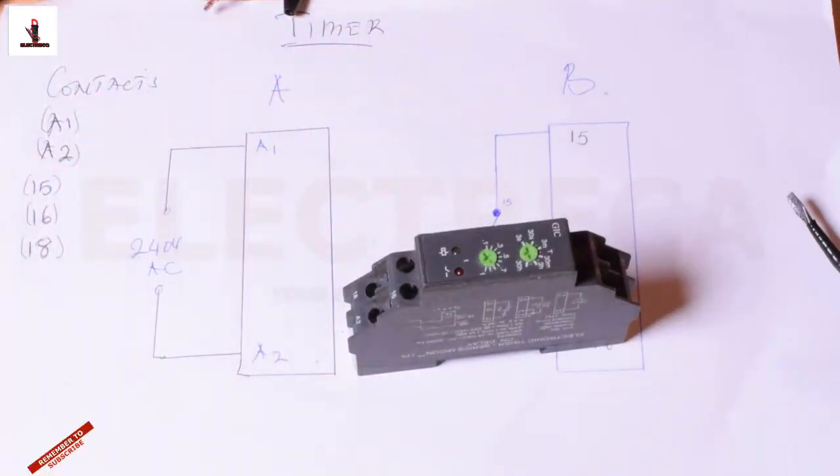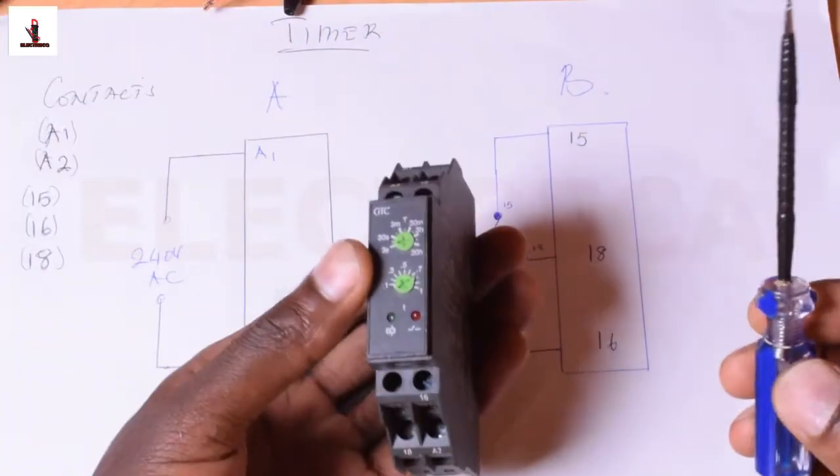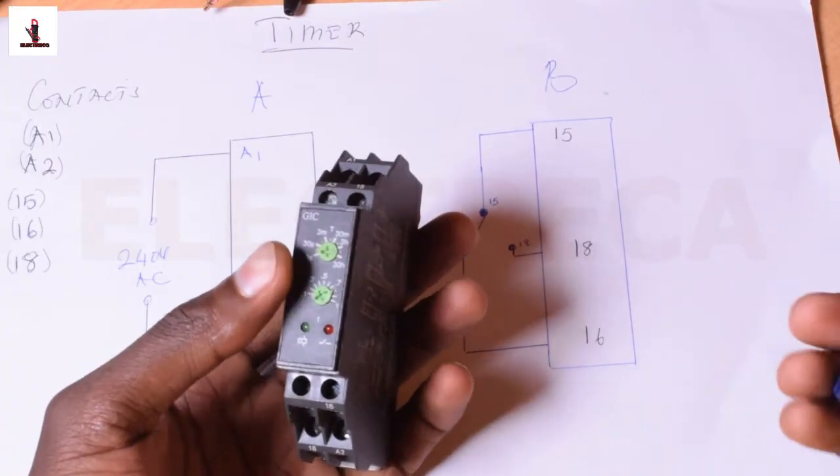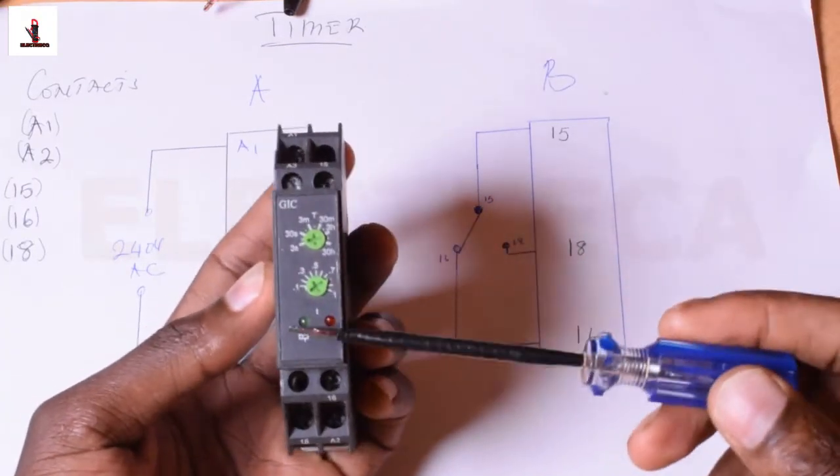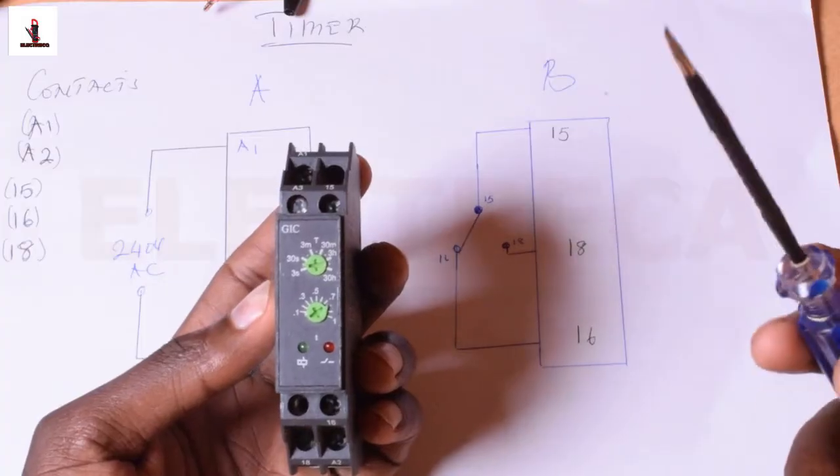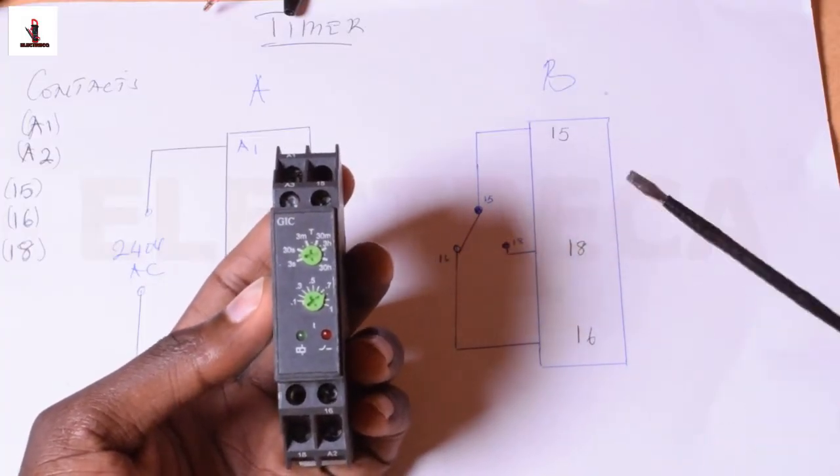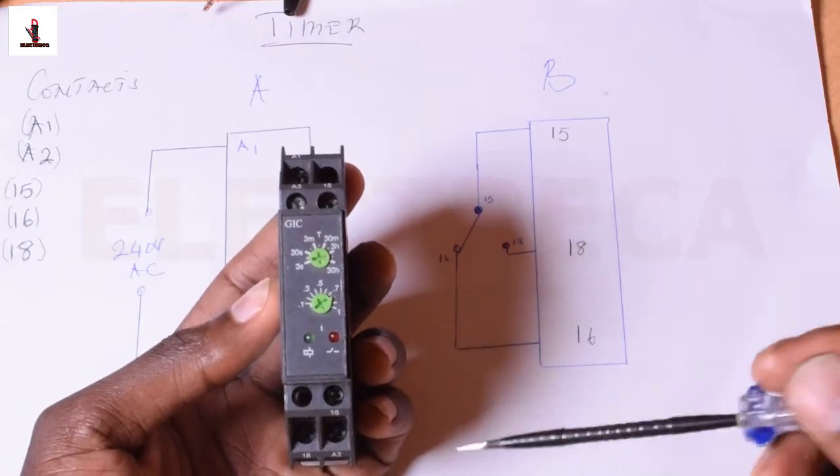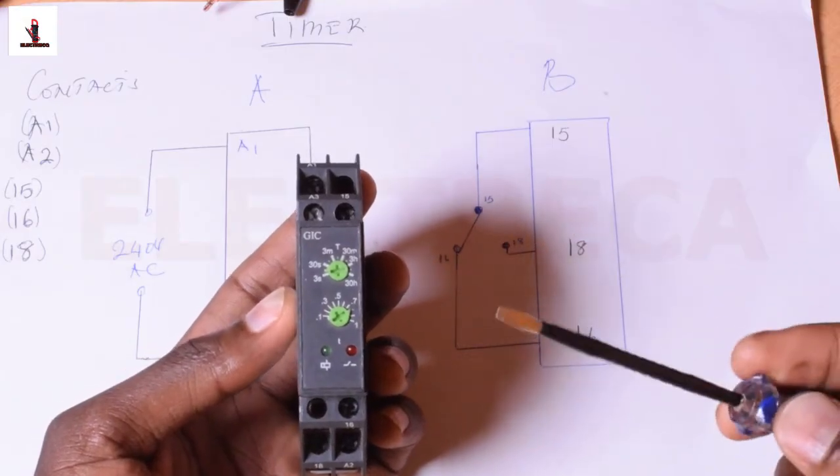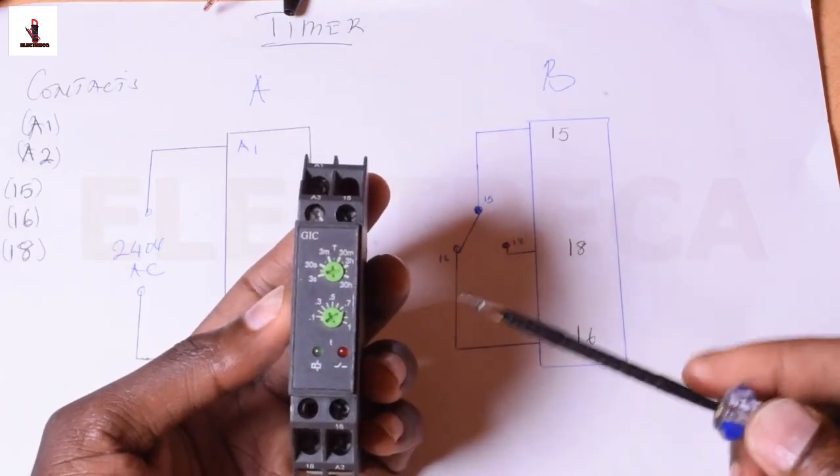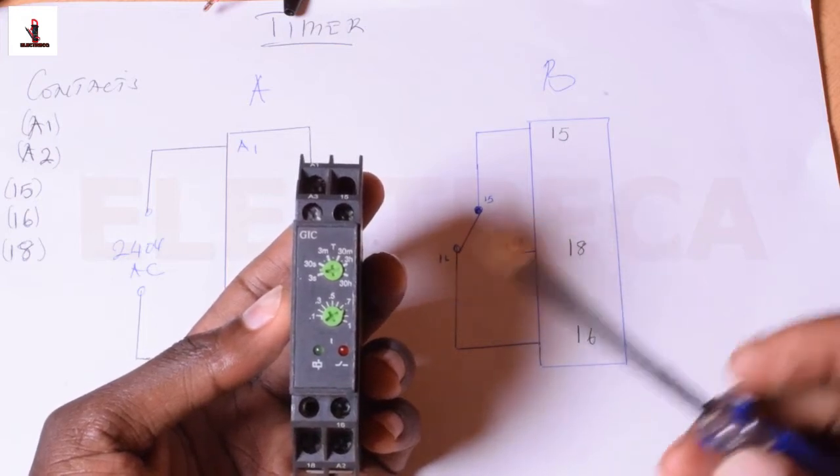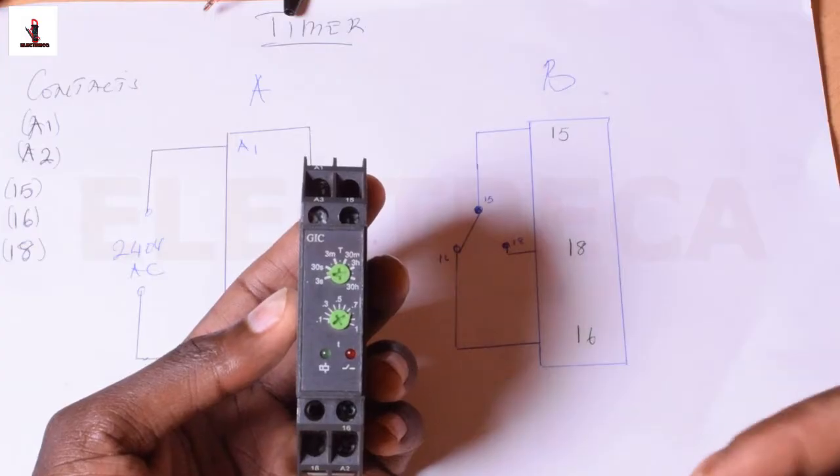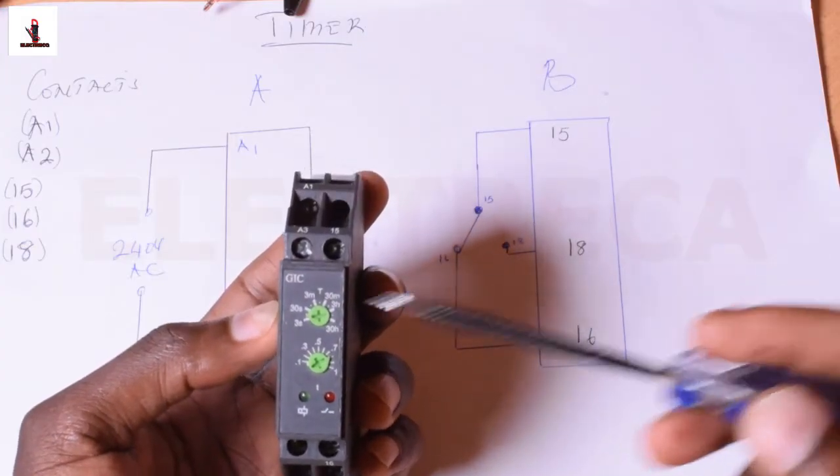Now let's look at where the thing is being used. First, in your changeover, this acts as on-delay. For example, let me say your main power is gone. So if your main power is gone and the generator is going to start, you know very well that if you have no timer in your circuit, it means that the generator will start on load.